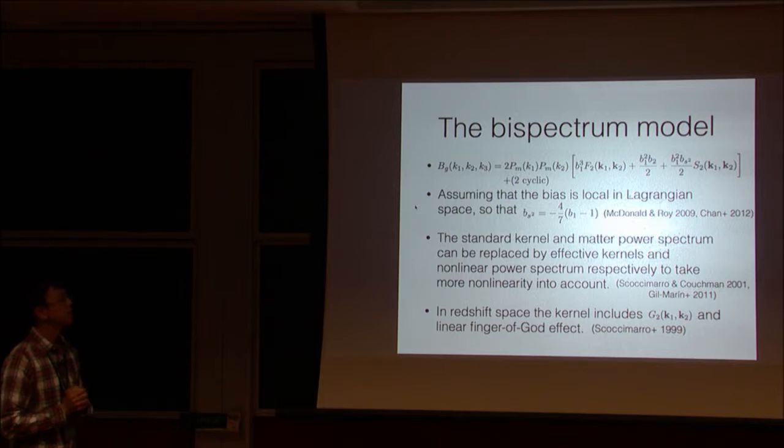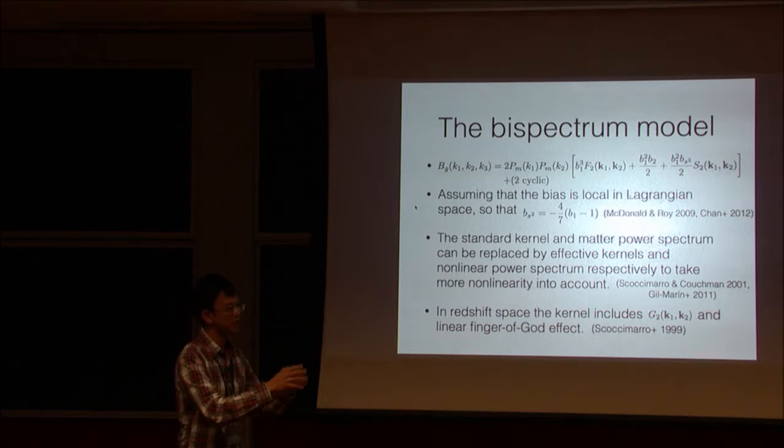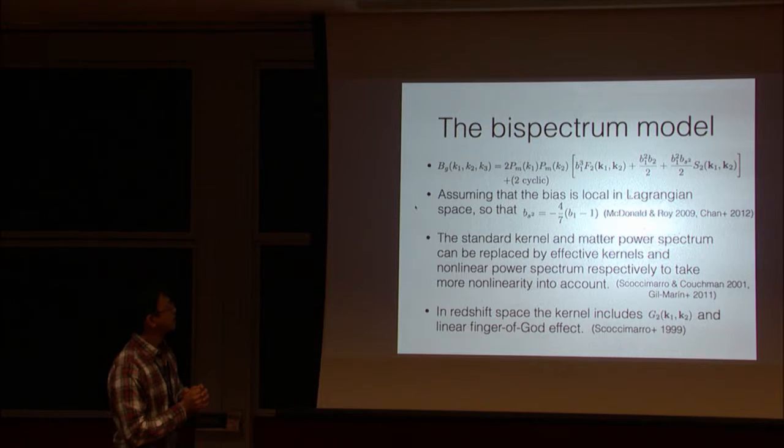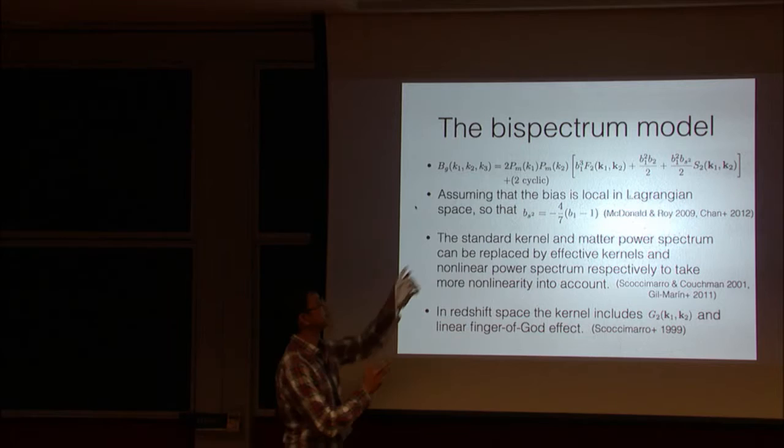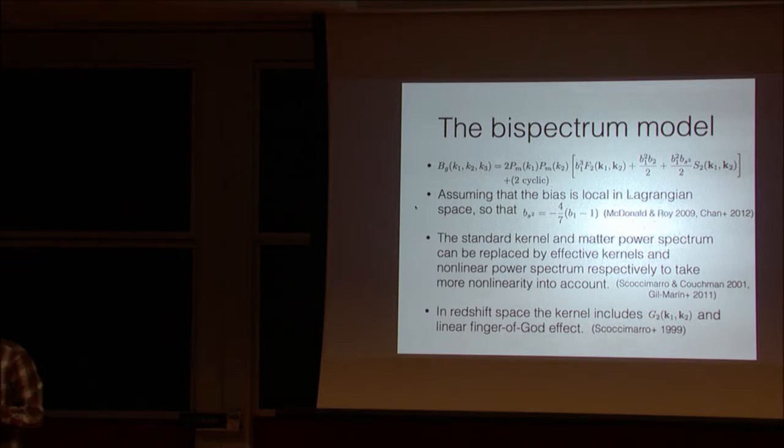And to take more nonlinear effect into account, you can replace the standard F2 with some like effective kernels. So you fit many fitting parameters. So there are nine fitting parameters that fit to n-body simulations. So this is some kind of phenomenological model. And you can also replace the linear power spectrum with nonlinear power spectrum. And so also, this is the bispectrum model in real space. So in redshift space, you just replace the kernel with including extra terms like G2, which is coming from velocity divergence, and also linear fingers of God. So this is the changing of the coordinate between real and redshift space. So it's quite lengthy, so I don't write them down here.